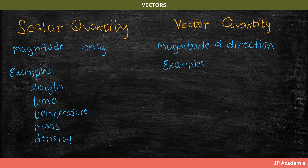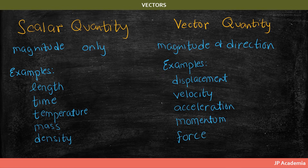On the other hand, for the case of vectors, we have the following examples: displacement, velocity, acceleration, momentum, and force. A vector quantity is mainly composed of a magnitude and its direction.